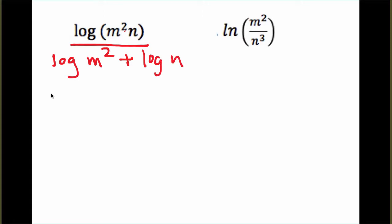And then the last thing that we want to do is any time we have an exponent, because all of this, the full m, is raised to the second power, this two can go in front and become multiplication. So this just becomes the expression 2 log m plus log n.